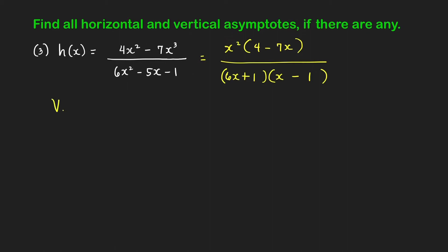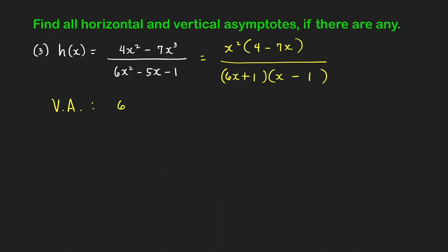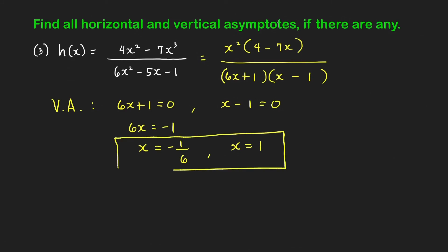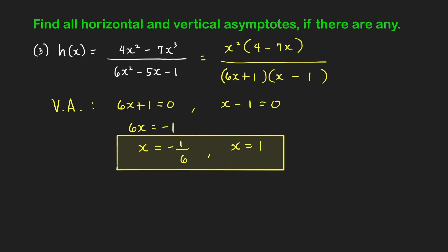To find the vertical asymptotes of h, we find the zeros of the denominator. The denominator is zero when 6x plus 1 equals zero, giving x equals negative one-sixth, or when x minus 1 equals zero, giving x equals 1. So we have two vertical asymptotes: x equals negative one-sixth and x equals 1.